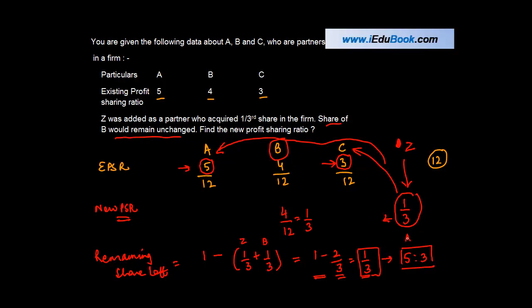So this profit belongs to only A and C in the ratio of 5:3, or we can say 5 upon 8 and 3 upon 8. So A will get 5 upon 8 into 1 upon 3, which is 5 upon 24. C will get 3 upon 8 into 1 upon 3, which is 1 upon 8.